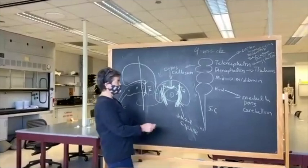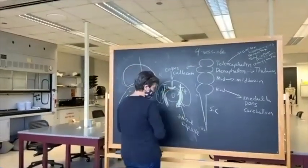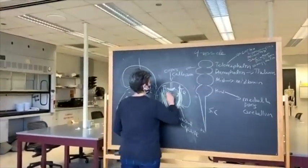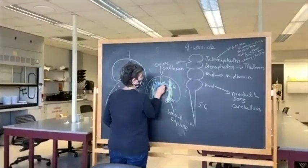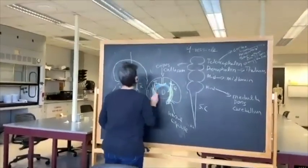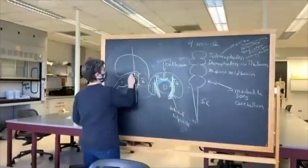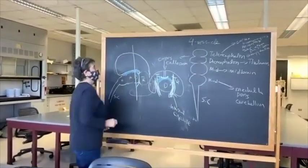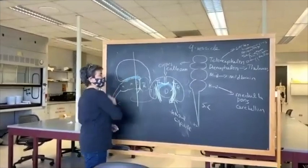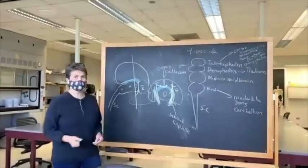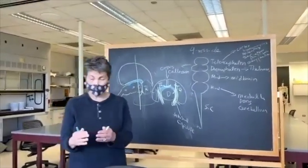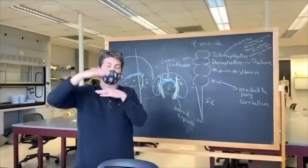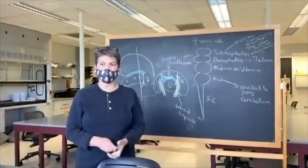So what is this space here between the telencephalon and the diencephalon? This space is outside of the brain — it's not part of the brain. It's the space that's formed by the comb-over.